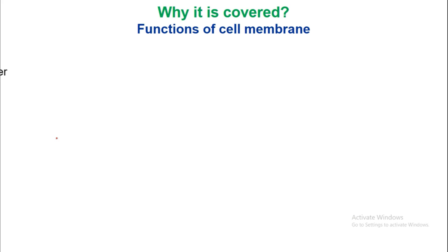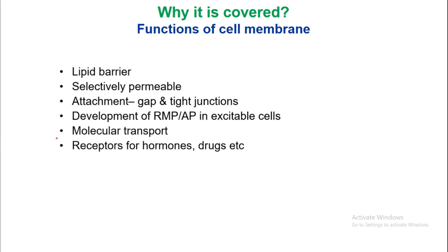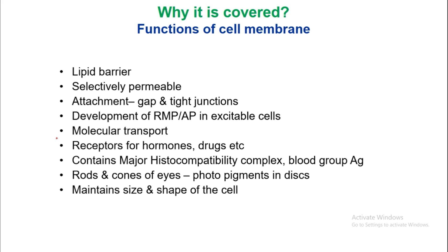Functions of the cell membrane: it forms a lipid barrier; it is selectively permeable — some ions may pass easily through the cell membrane while others find it difficult. It enables attachment via gap junctions and tight junctions, by which one cell communicates with another. It is involved in development of resting membrane potential and action potential in excitable cells, molecular transport, receptors for hormones and drugs, contains major histocompatibility complex and blood group antigens, and maintains size and shape of the cell.